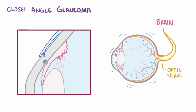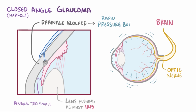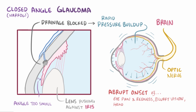Another type of glaucoma is closed-angle glaucoma, also known as angle closure glaucoma or narrow-angle glaucoma, and this is due to the angle between the iris and the cornea being too small, meaning that the passageway for aqueous humor outflow is too narrow, as a result of the lens being pushed against the iris. The drainage system gets blocked again, but this time causes a rapid buildup of pressure within the eye, which can cause abrupt onset of severe eye pain, eye redness, blurry vision, headaches, nausea, and visual halos.